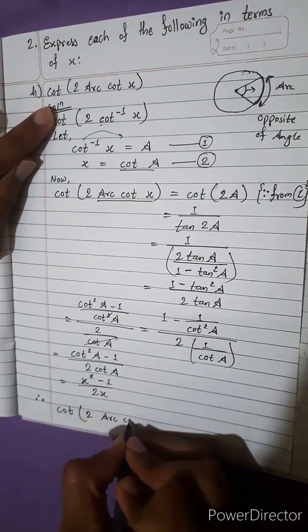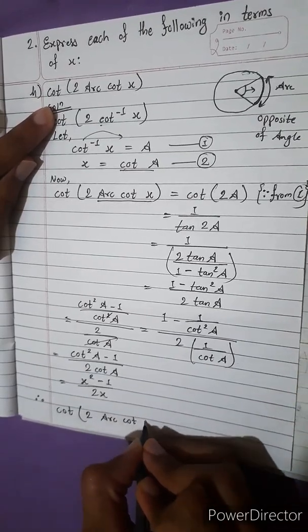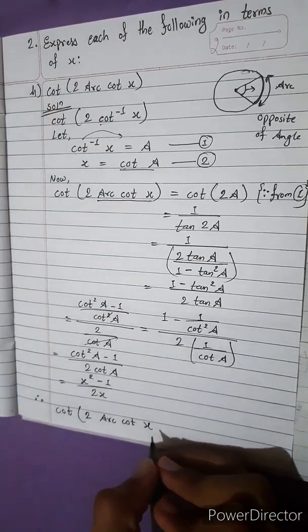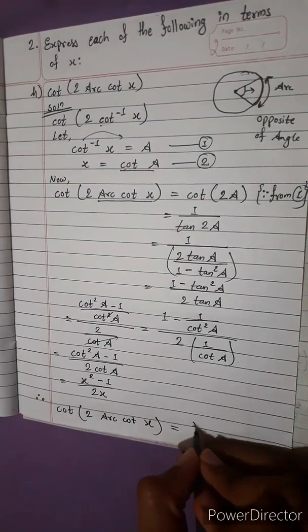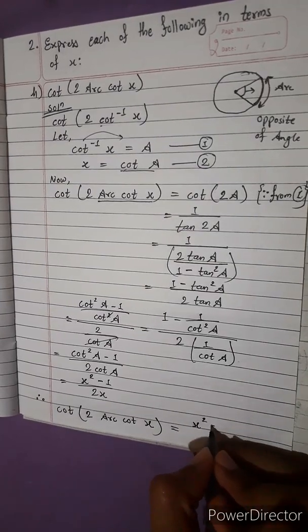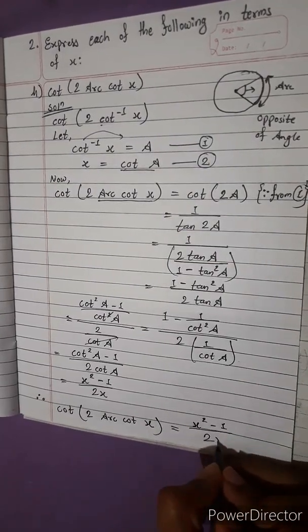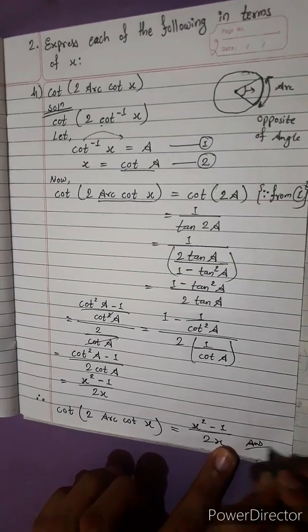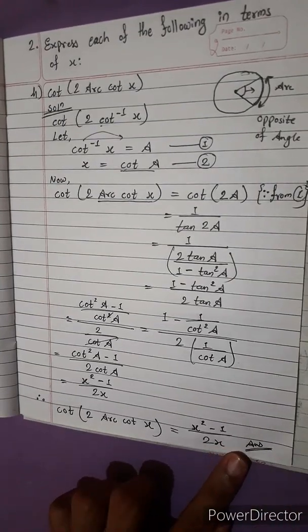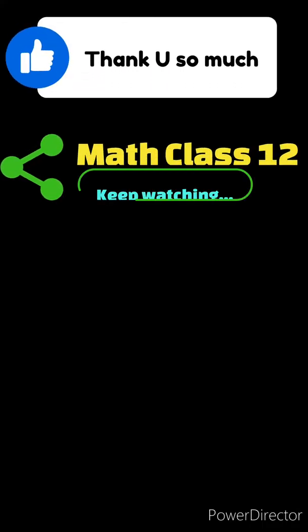So cot 2 arc cot x equals x squared minus 1 upon 2x. This is our answer. Now be ready for the next question. Thank you and bye bye, we'll see you guys next time.